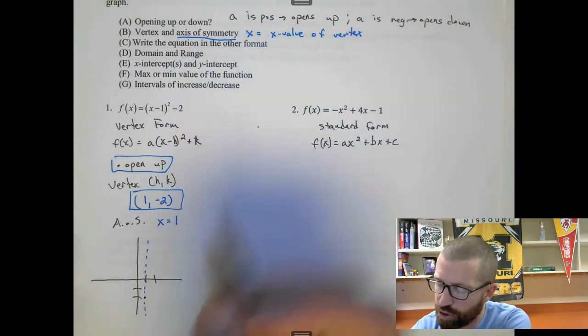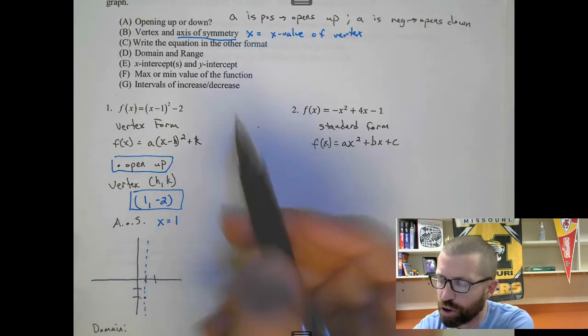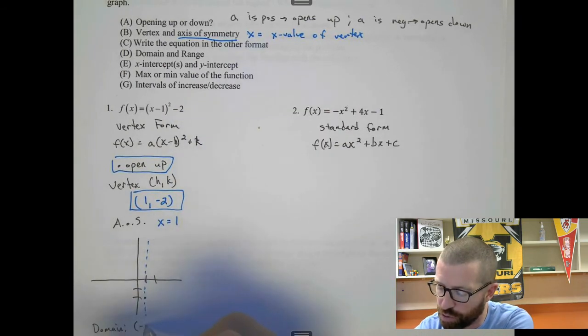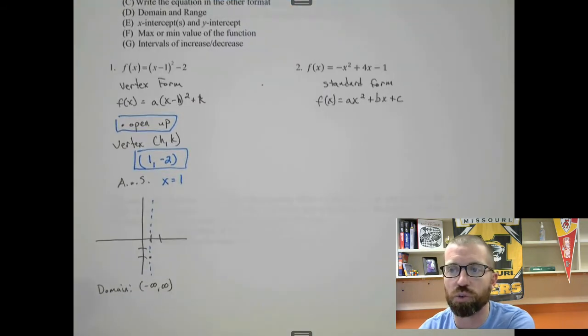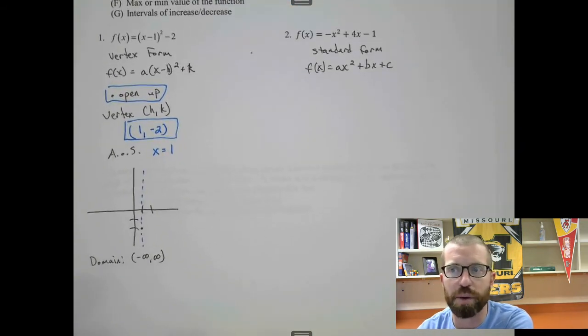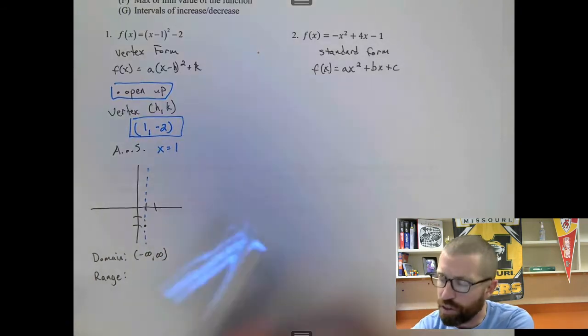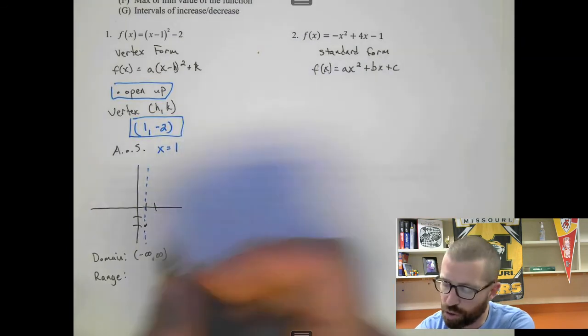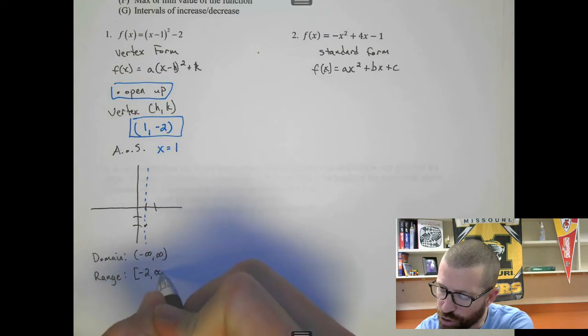Okay, domain and range. Domain is a little bit easier for quadratics, because there are no problems here. It's just all real numbers. So we're going to say from negative infinity to infinity. That would be for every parabola. And then range, we go from the bottom to the top. This is a graph that's going to open up, so the lowest value is negative 2, and then it's going to go up forever to infinity.